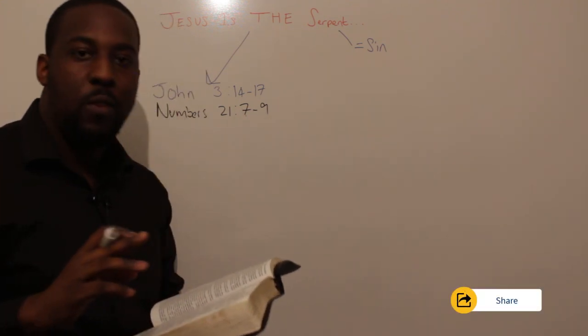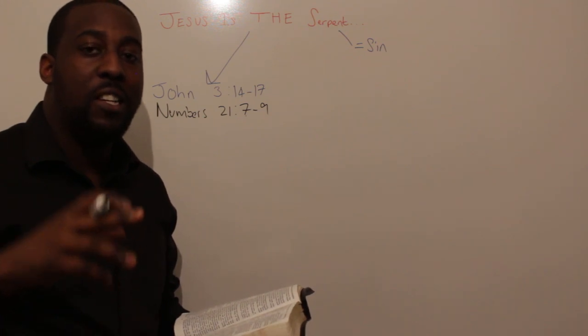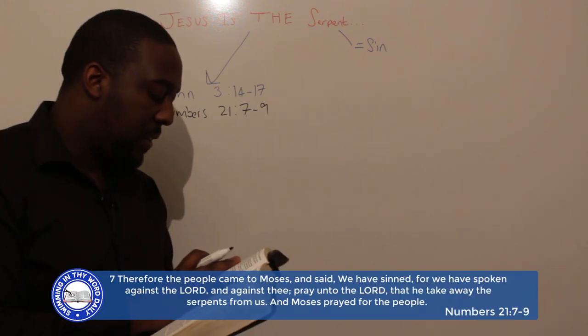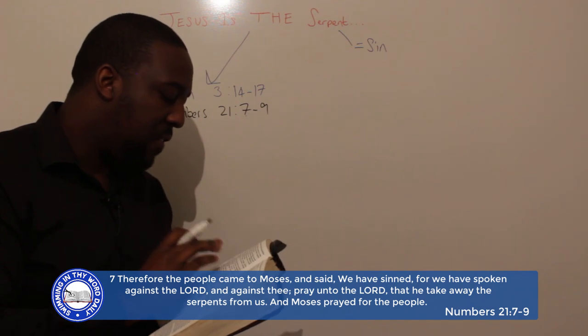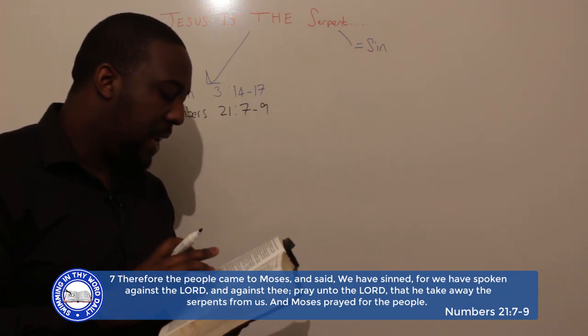Verse 7. This is when the people, the Israelites, had actually messed up with God and God is punishing them. Look what it says: 'Therefore the people came to Moses and said, We have sinned, for we have spoken against the Lord and against thee. Pray unto the Lord that he take away the serpents from us.' And Moses prays for the people.